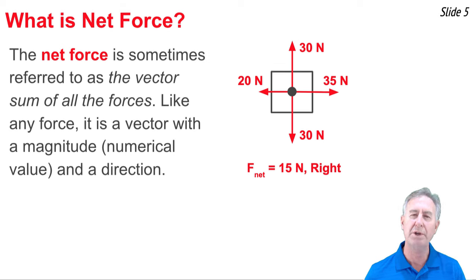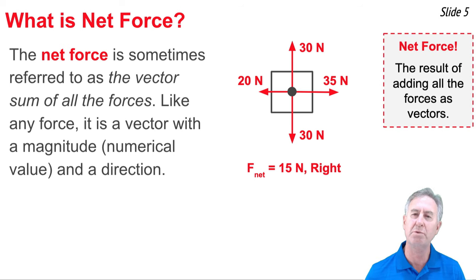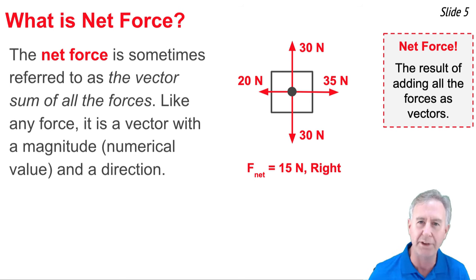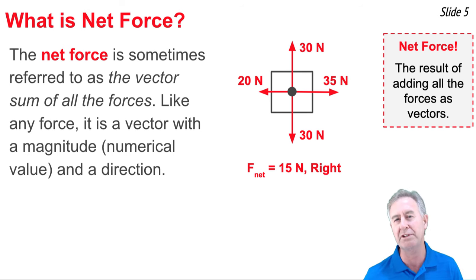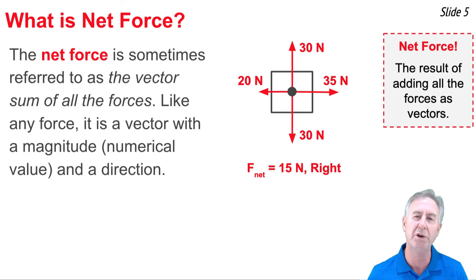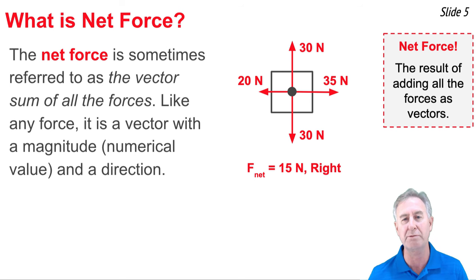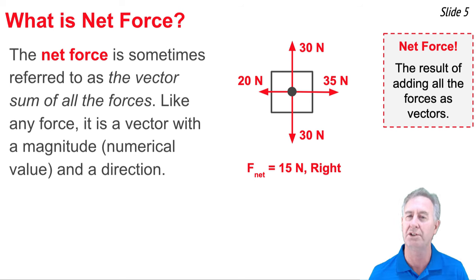What is net force? We sometimes refer to it as the vector sum of all the forces — what you get when you take all the individual forces and add them up as vectors, considering their left/rightness and up/downness. For instance, in this diagram there are four forces acting upon the object. The up and down forces are of equal magnitude and balance each other out. But the right force is bigger than the left force by 15 newtons, so we say the net force is 15 newtons to the right.